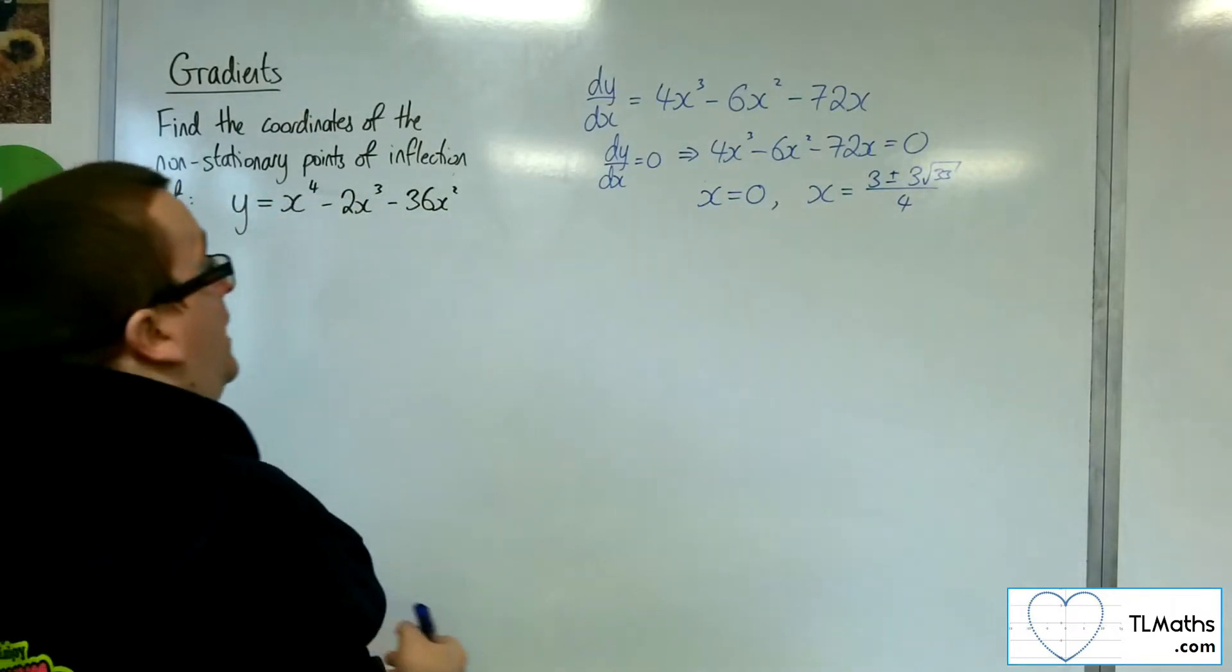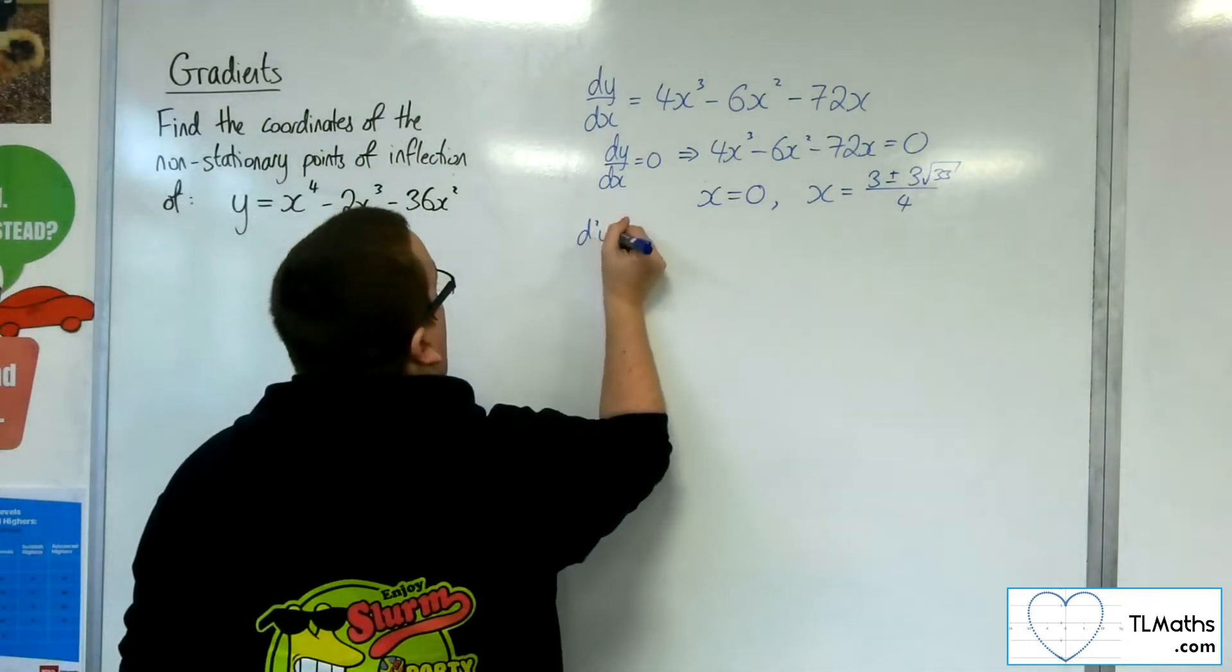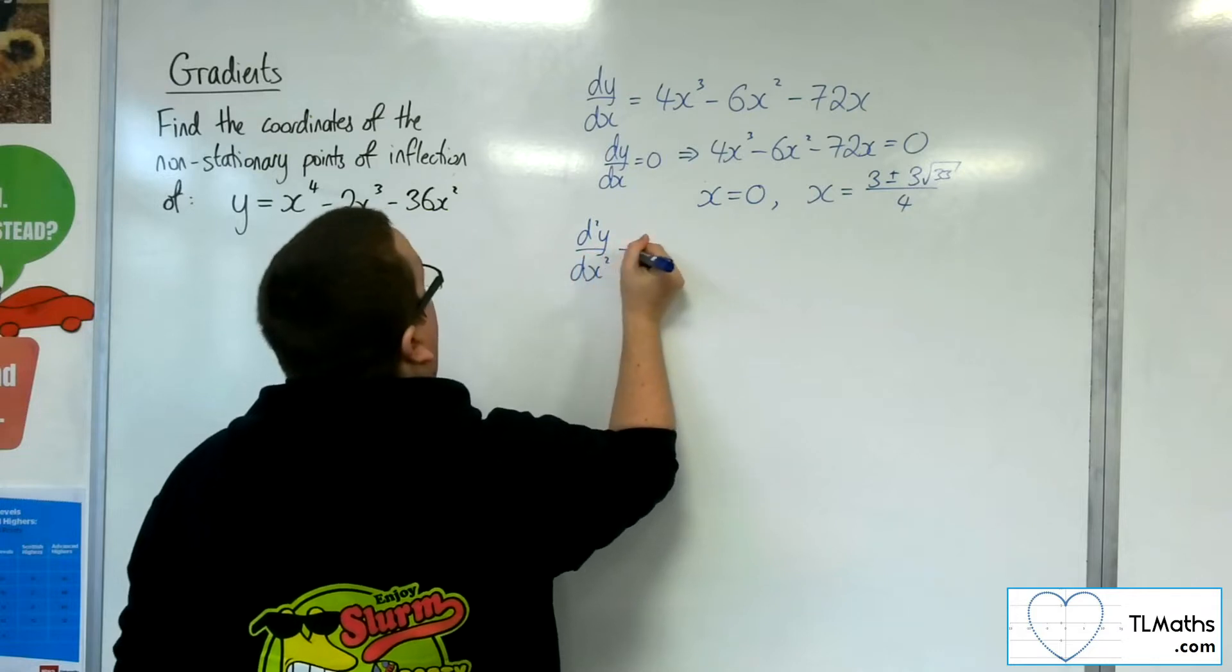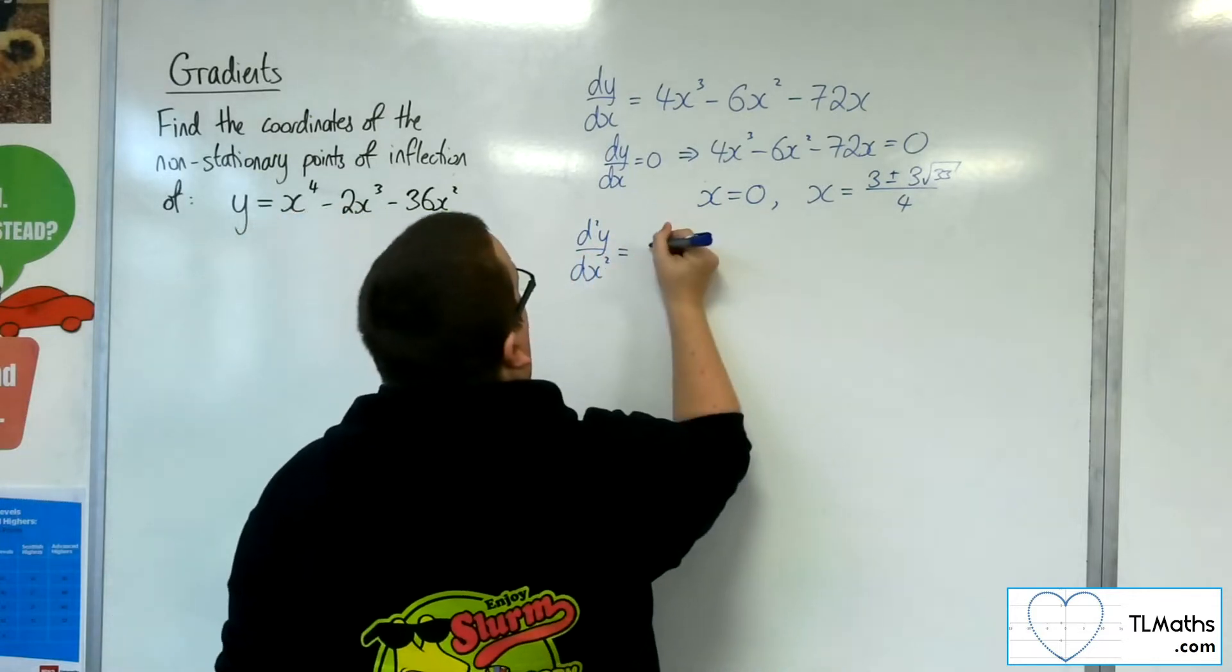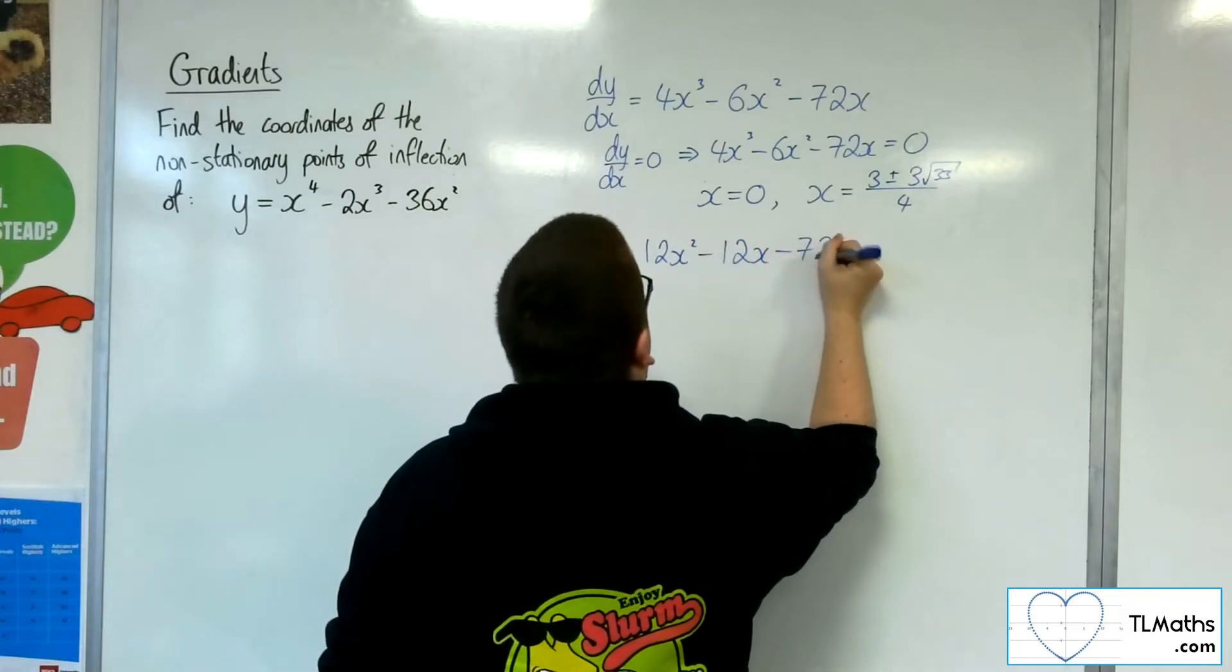So that's where the stationary points are. So there are three stationary points. So the second derivative, we get 12x squared, take away 12x, take away 72.